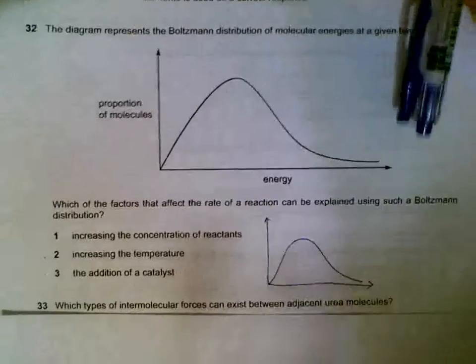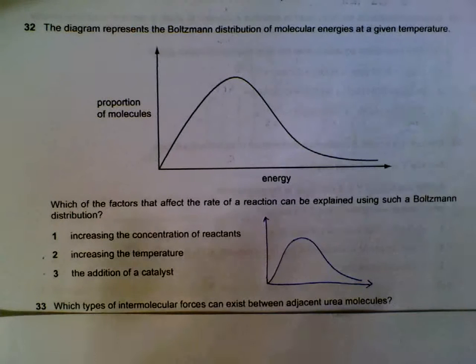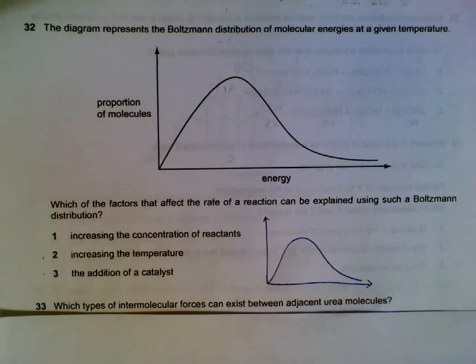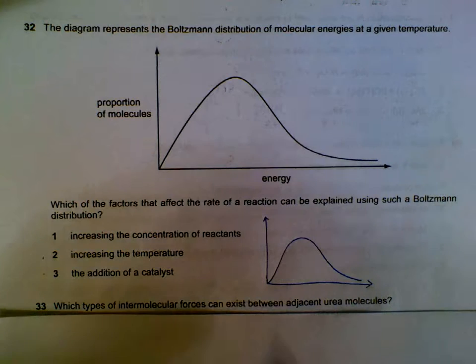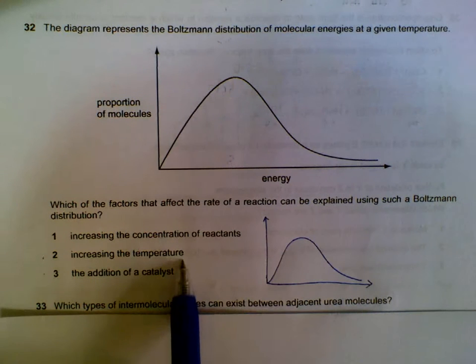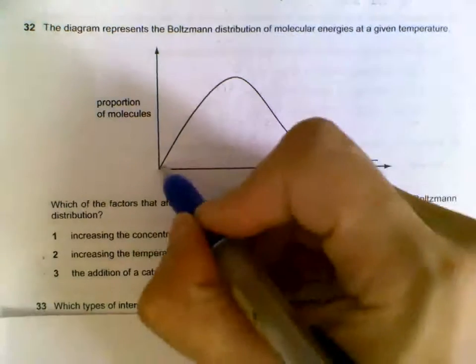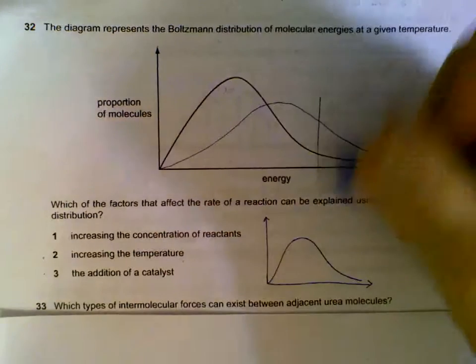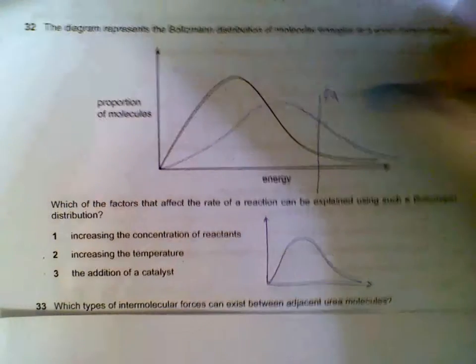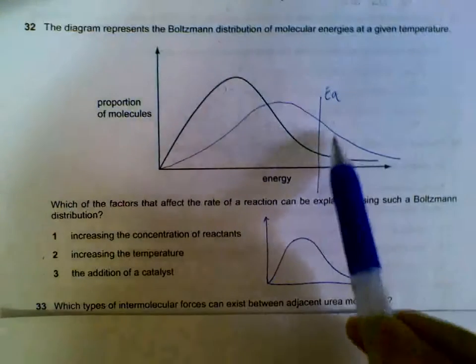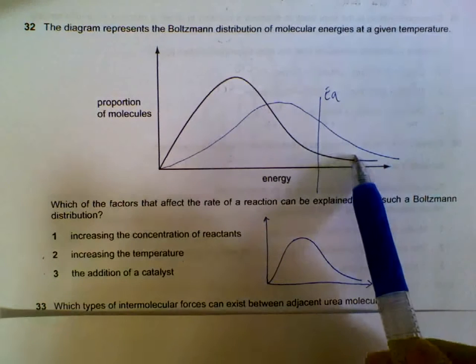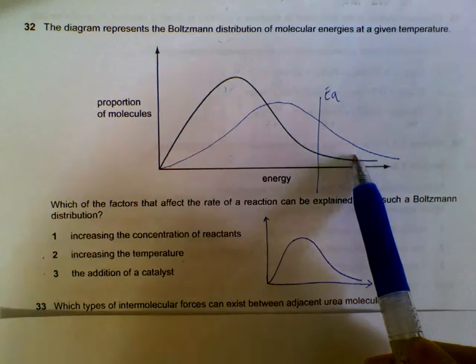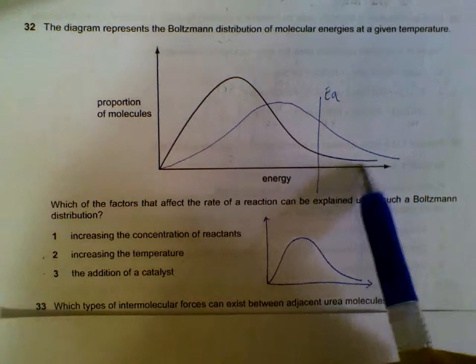Question 32. Boltzmann distribution energy. What can we use to explain the rate of reaction? We can use it to explain how increasing temperature will increase the rate of reaction. At a higher temperature, let's say this is the activation energy, we have a higher portion of particles that have more than the activation energy compared to the one that is at the lower temperature.